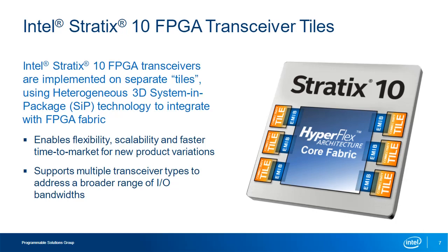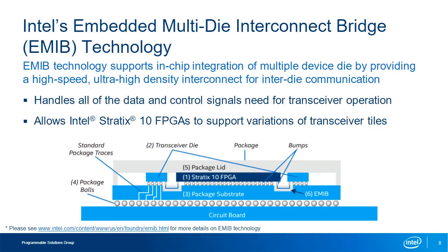Different tiles with different transceiver implementations and supported protocol ranges can be developed and offered on different device variants or even within the same device variant. To facilitate integration of multiple device die within the same package, Stratix 10 FPGAs use Intel's patented Embedded Multi-Die Interconnect Bridge or EMIB technology. EMIB provides a high-bandwidth, ultra-high-density connection for all data and control signals to and from the FPGA core and the transceiver tiles, allowing current and future variants to provide a wide range of transceiver, DRAM, and other application-specific functionality beyond what is possible with a single-die solution.